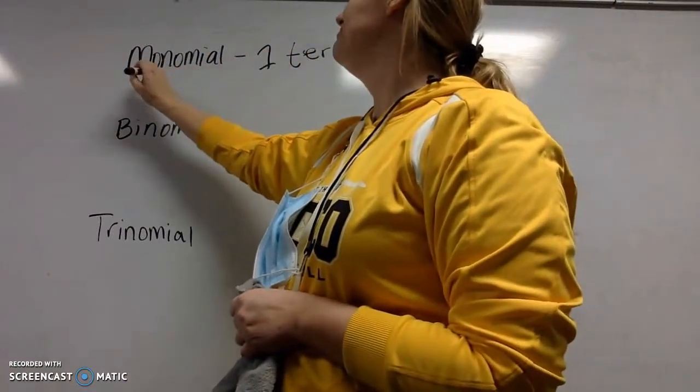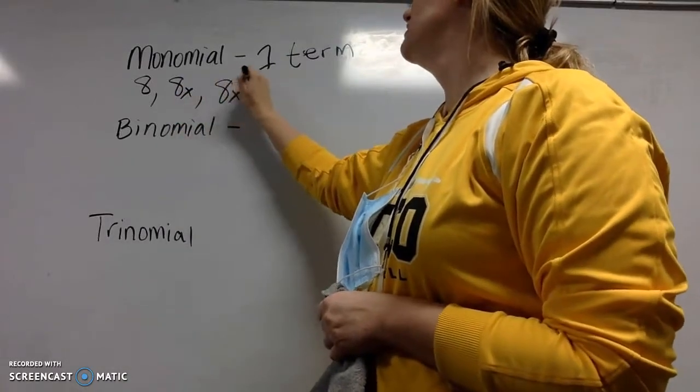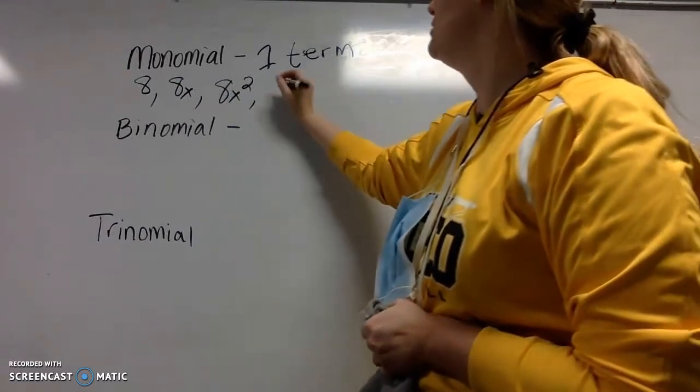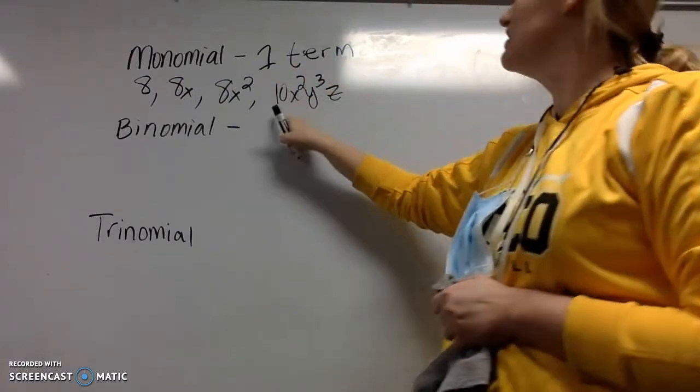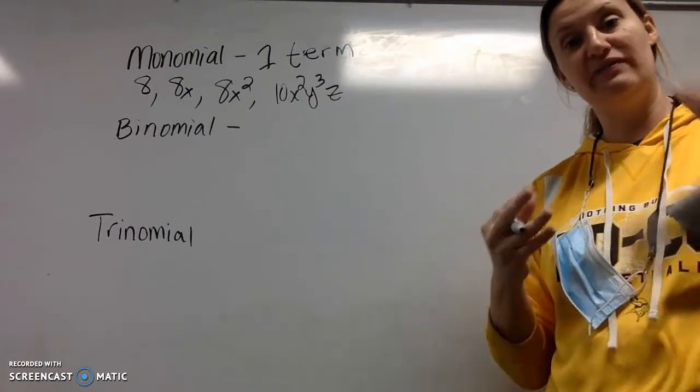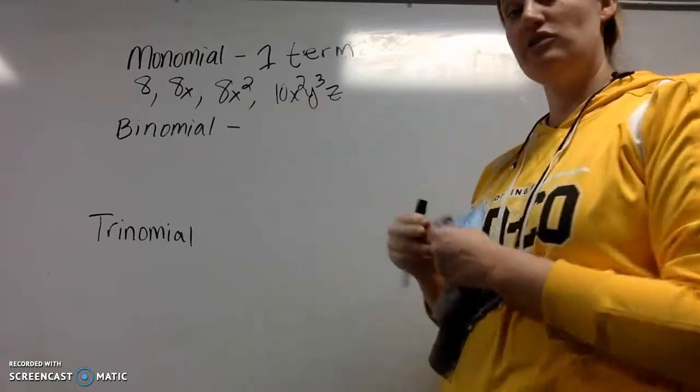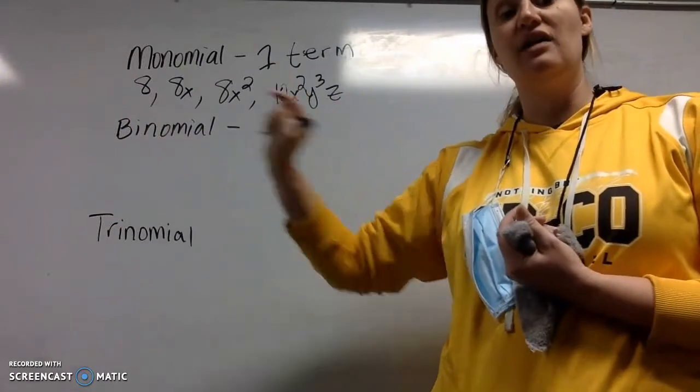So we have, like I said, the number 8, 8x, 8x squared. Of course, I could have a different coefficient. 10x squared, y to the third, z. That is a monomial because the term, again, is multiplication of a number and variables. This is all multiplication. There is no addition or subtraction to separate it. So those are all examples of monomials.